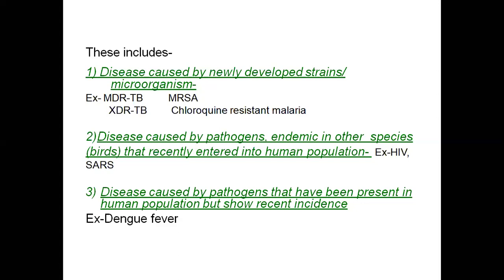The second category is disease caused by pathogens endemic in other species that recently entered the human population. Examples include HIV and SARS. SARS and MERS are coronavirus transmissions identified first in camels, then bats, cats, and eventually human beings — the source of COVID-19.